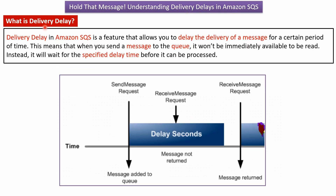Now we will see what delivery delay is. Delivery delay in Amazon SQS is a feature that allows you to delay the delivery of a message for a certain period of time. This means when you send a message to the queue, the message won't be immediately available to be read. Instead, the message will wait for a specified delay time before it can be processed.